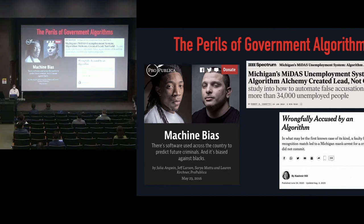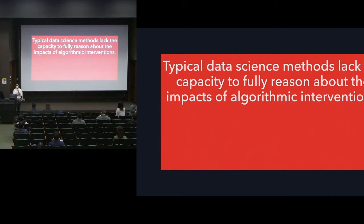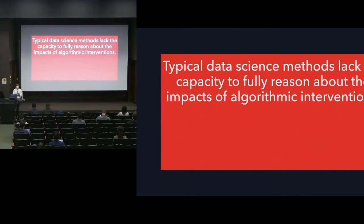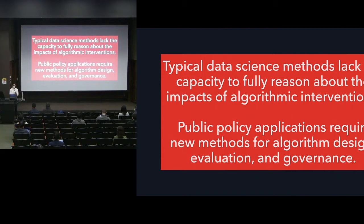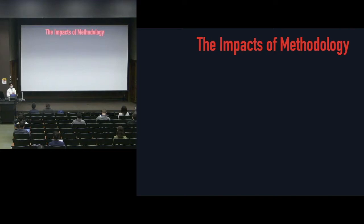These issues raise significant questions about how governments can take advantage of the opportunities presented by data science without incurring injustices. One central cause of these algorithmic harms is a set of limitations within data science methodology. Typical data science methods lack the capacity to fully reason about the social and political impacts of algorithmic interventions. We need to develop new methods that enable more rigorous reasoning about the social impacts of algorithmic interventions — new methods for the design, evaluation, and governance of data science tools.